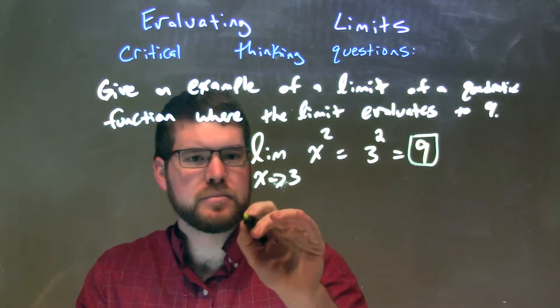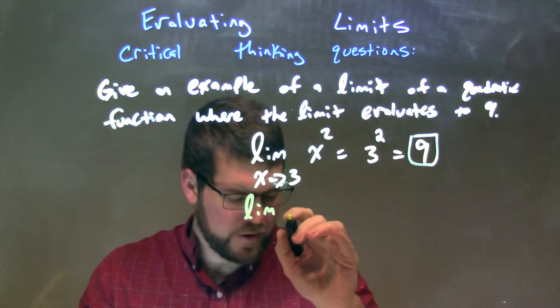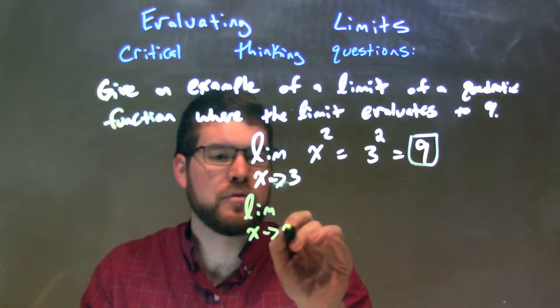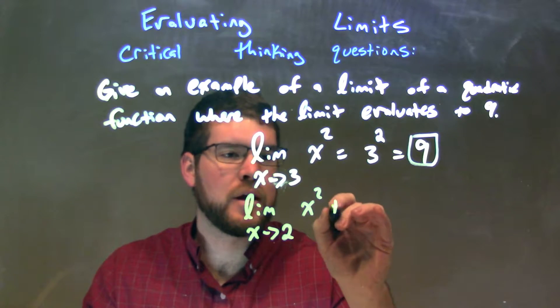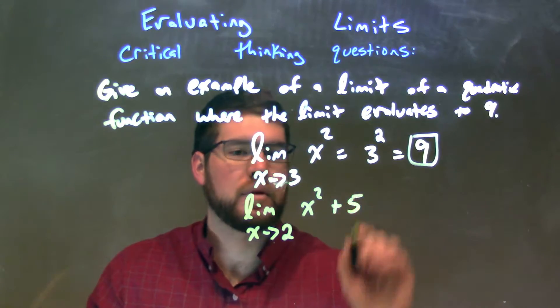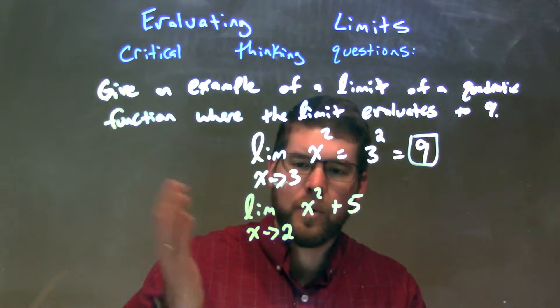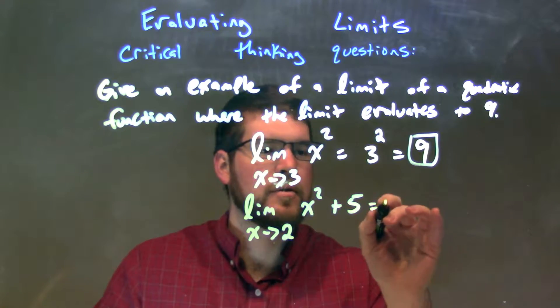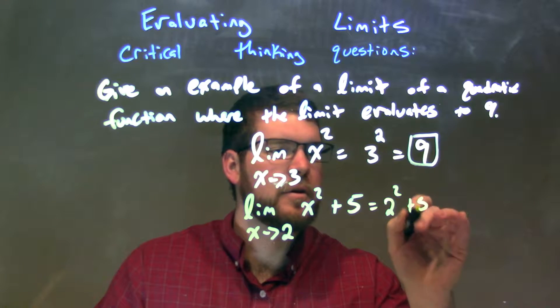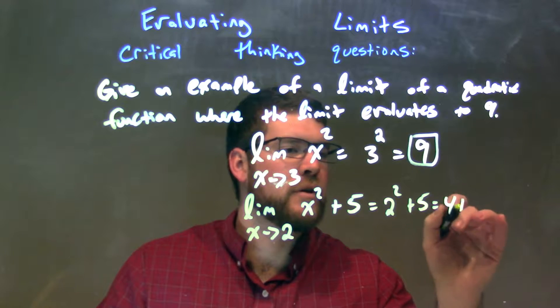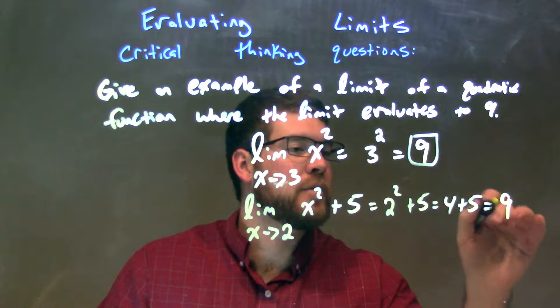Another one we can do, I'm going to change it up a little bit, is limit as x approaches 2 of x squared plus 5. Again, polynomial, we plug 2 directly in for x. 2 squared plus 5, 2 squared is 4, so we have 4 plus 5, which is also equal to 9.